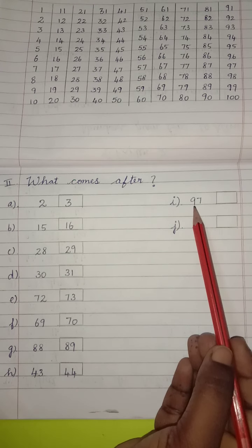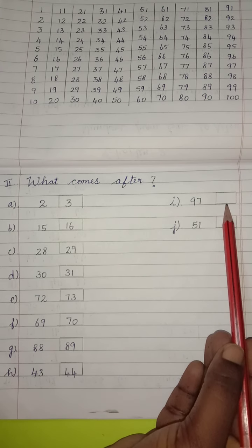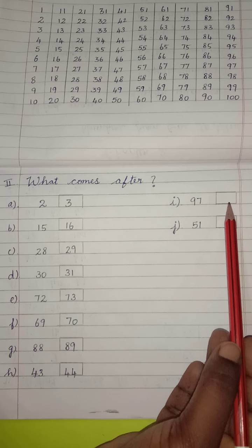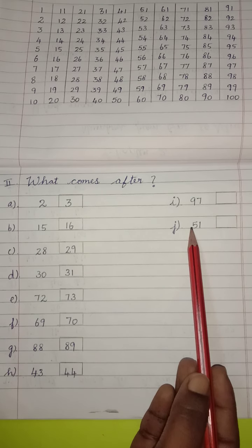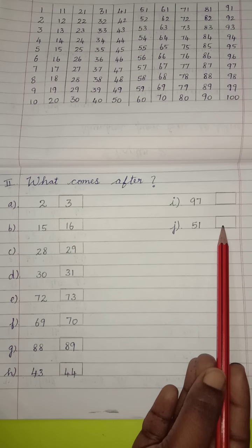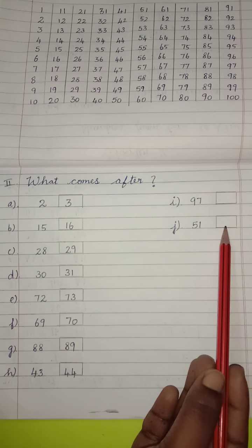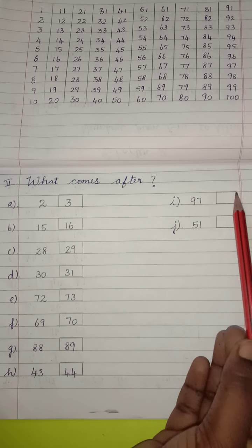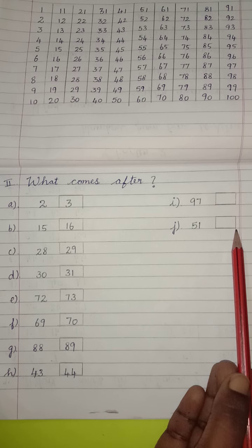Then 97 after? What will come? You write in the given box. Yes. Then 51 after? Yes. Think and write the answer. These 2 alone, you itself think and write the answer, children.